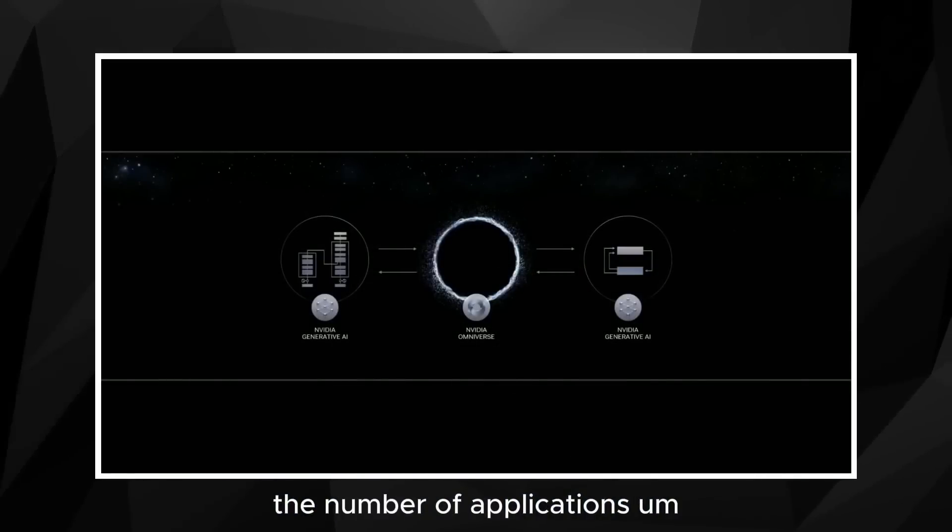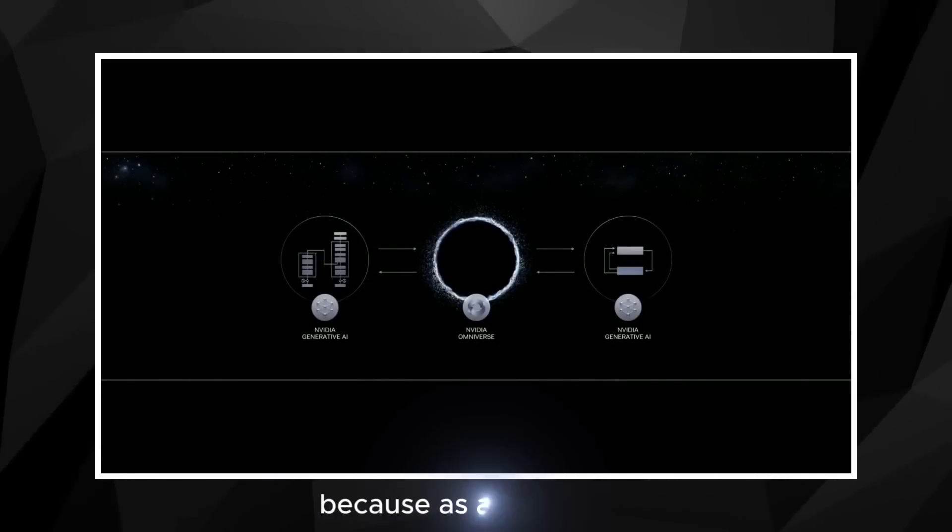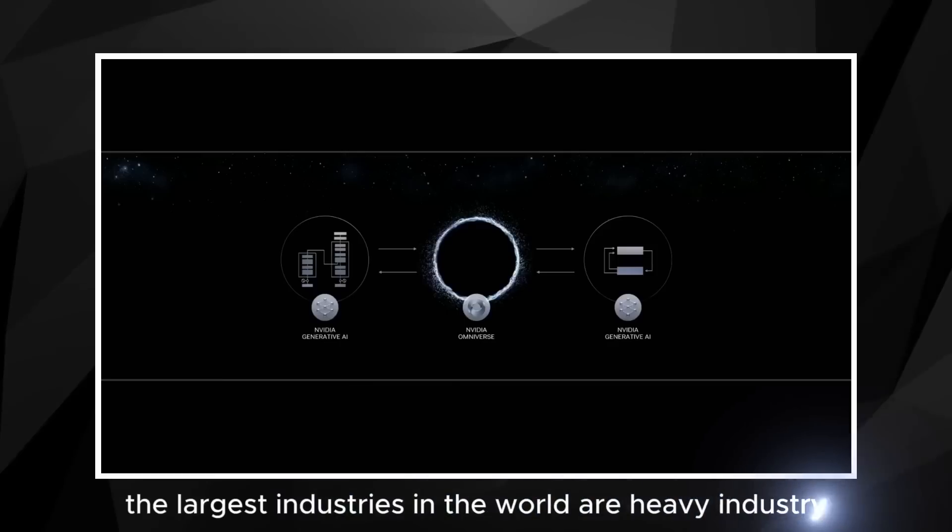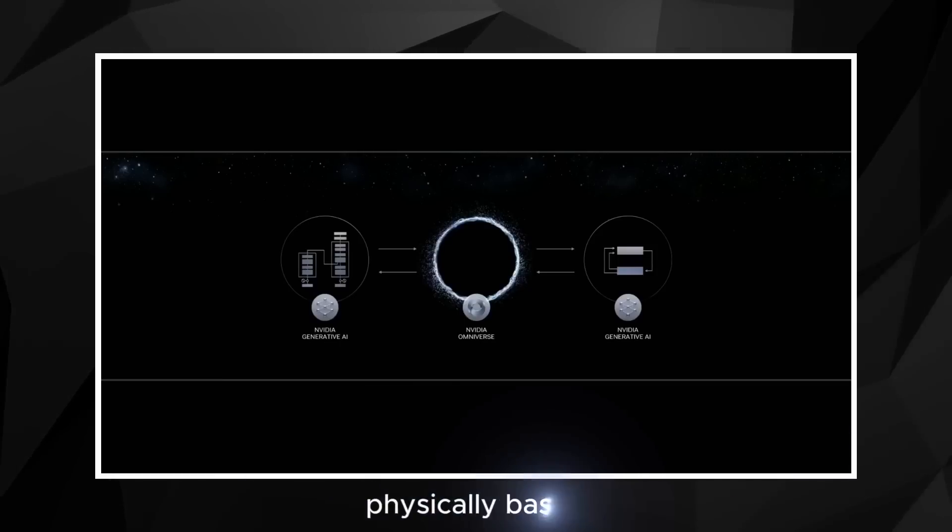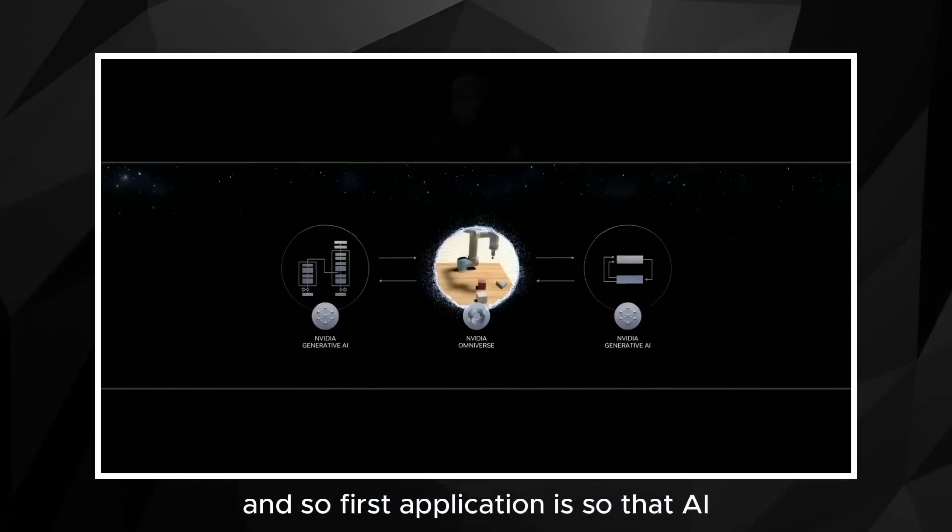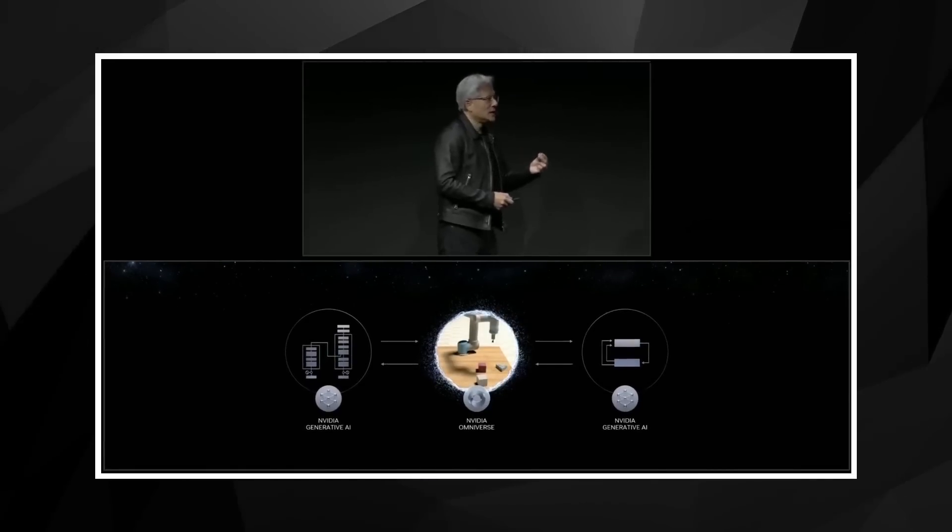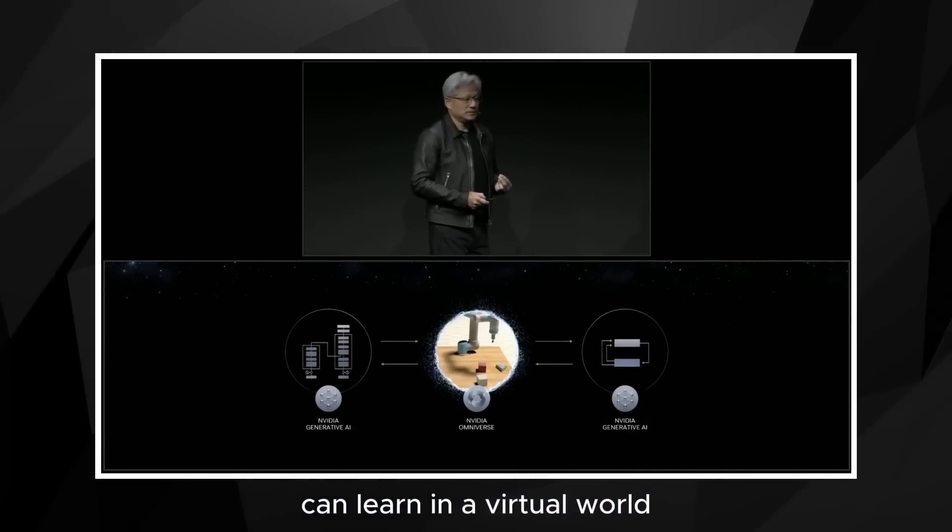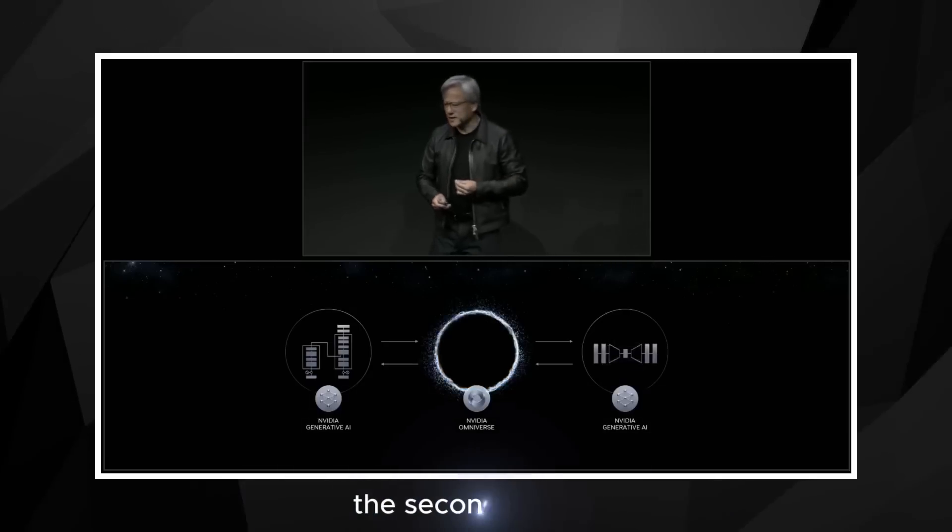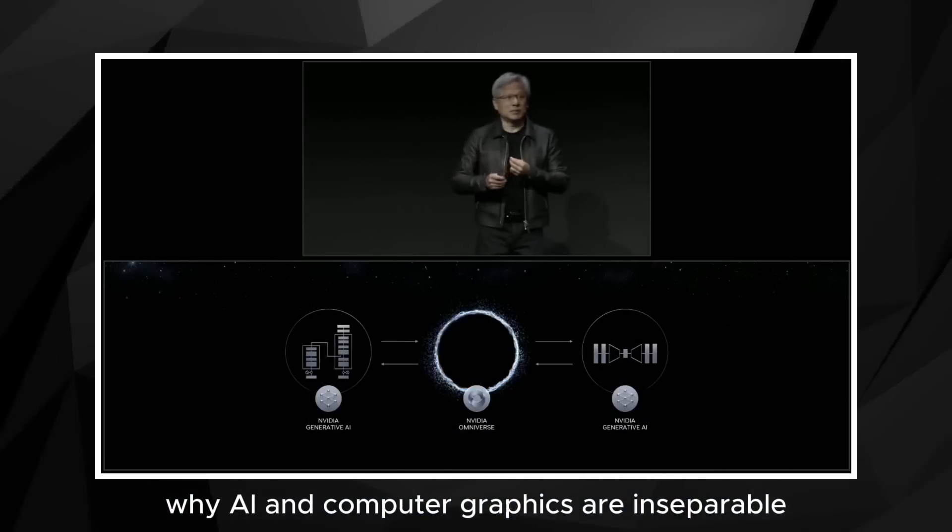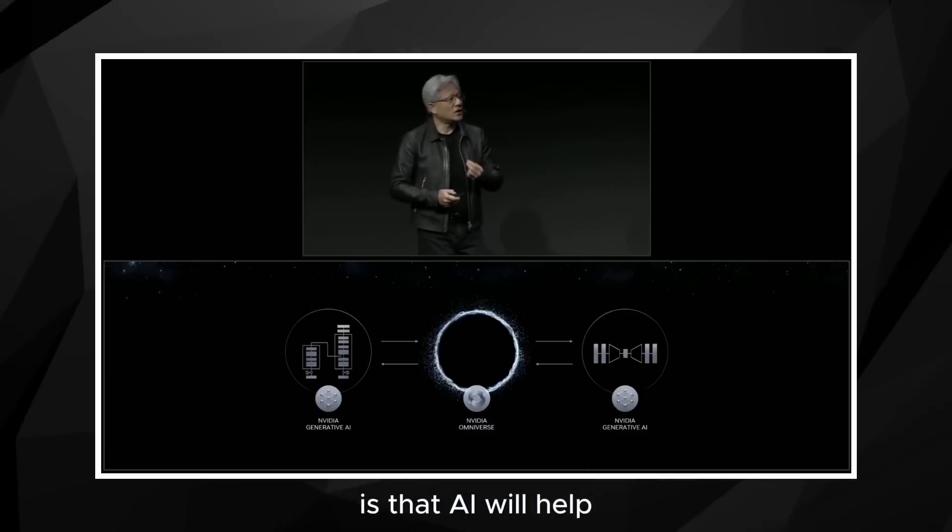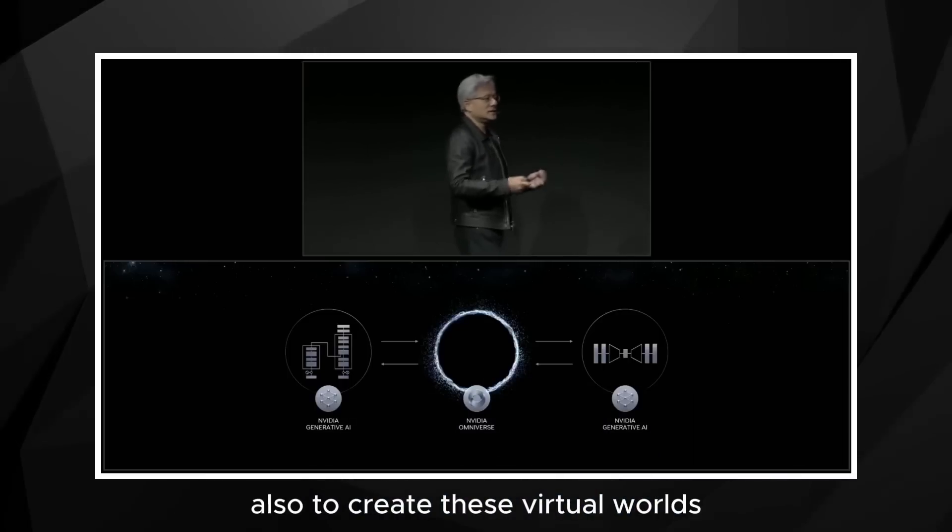The number of applications is really quite exciting because, as we know, the largest industries in the world are heavy industry, and those heavy industries are physics-based, physically-based. And so first application is so that AI can learn in a virtual world. The second application, the second reason why AI and computer graphics are inseparable, is that AI will help also to create these virtual worlds.